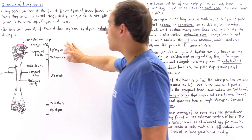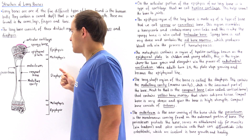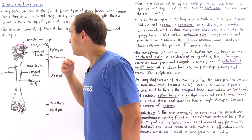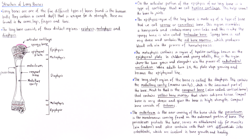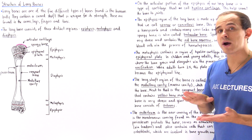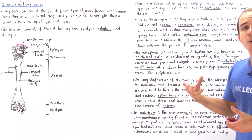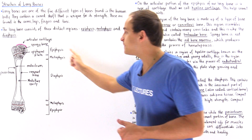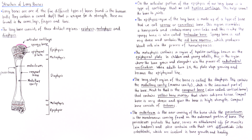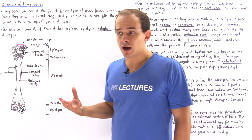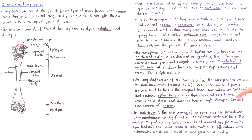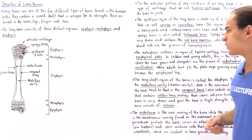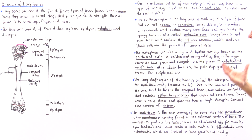Inside the metaphysis we have a special region known as the epiphyseal plate. The epiphyseal plate is the region where, in children and young adults, the bone grows, elongates, and increases in length. Once a human reaches full adulthood around the age of 25, this plate essentially stops growing and the epiphyseal plate turns into the epiphyseal line, meaning it stops growing.